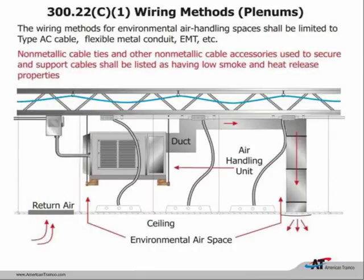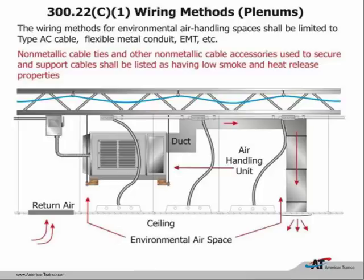Article 300 addresses wiring methods above a suspended ceiling. When a plenum uses that space for return air, we must wire with either plenum-rated cable or metallic wiring methods. Now cable ties used in plenums must also be listed, having low smoke and heat release properties. Previously you might use a clear or white tie wrap indoors or a black UV-resistant tie wrap outdoors—now there's a specific listed type for plenums.